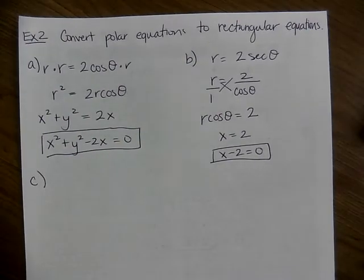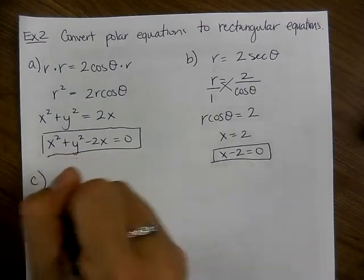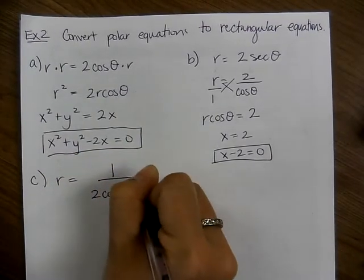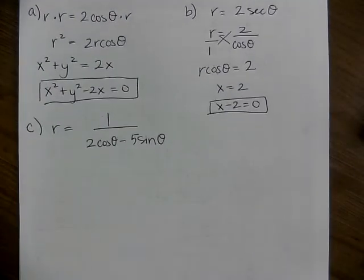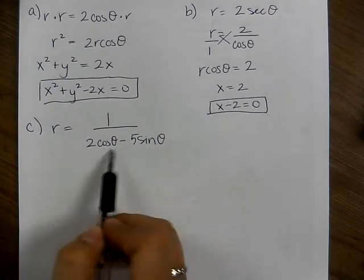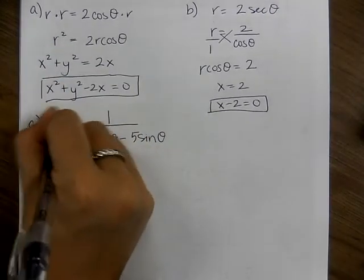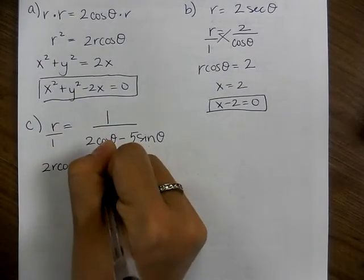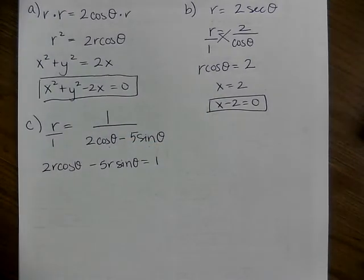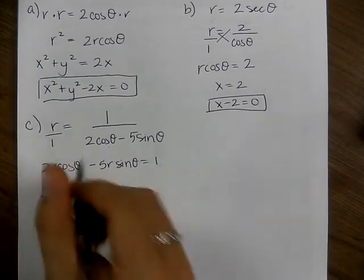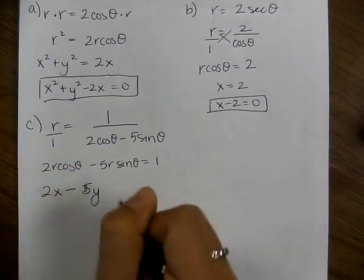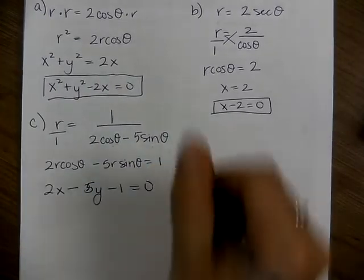How about this? r=1/(2 cos θ-5 sin θ). We should make this one a proportion as well because we're missing our r for cosine and sine. So if we multiply by that r, I'm able to get both of those pieces. So I have 2r cos θ-5r sin θ=1. r cos θ is just x and r sin θ is y. And then we can bring over the 1. So 2x-5y-1=0.